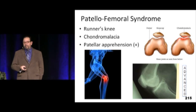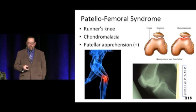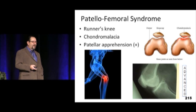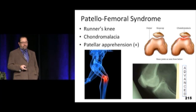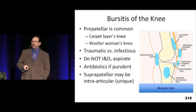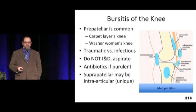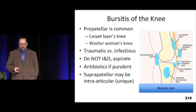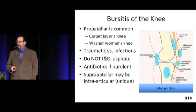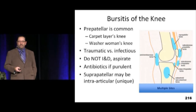Patellofemoral syndrome, sometimes called runner's knee — it's subpatellar chondromalacia. You'll see it on a sunrise view where the patella sits awkwardly. On a lateral view there's just no joint space under the patella — it's riding directly on the femoral condyles in advanced cases. They complain a lot about going up and down stairs and will have a positive patellar apprehension test. For bursitis of the knee — when someone has a big knob over their kneecap, don't call it suprapatellar bursitis. It's prepatellar bursitis. The suprapatellar bursa is often continuous with the joint, so calling prepatellar suprapatellar is an important mistake.